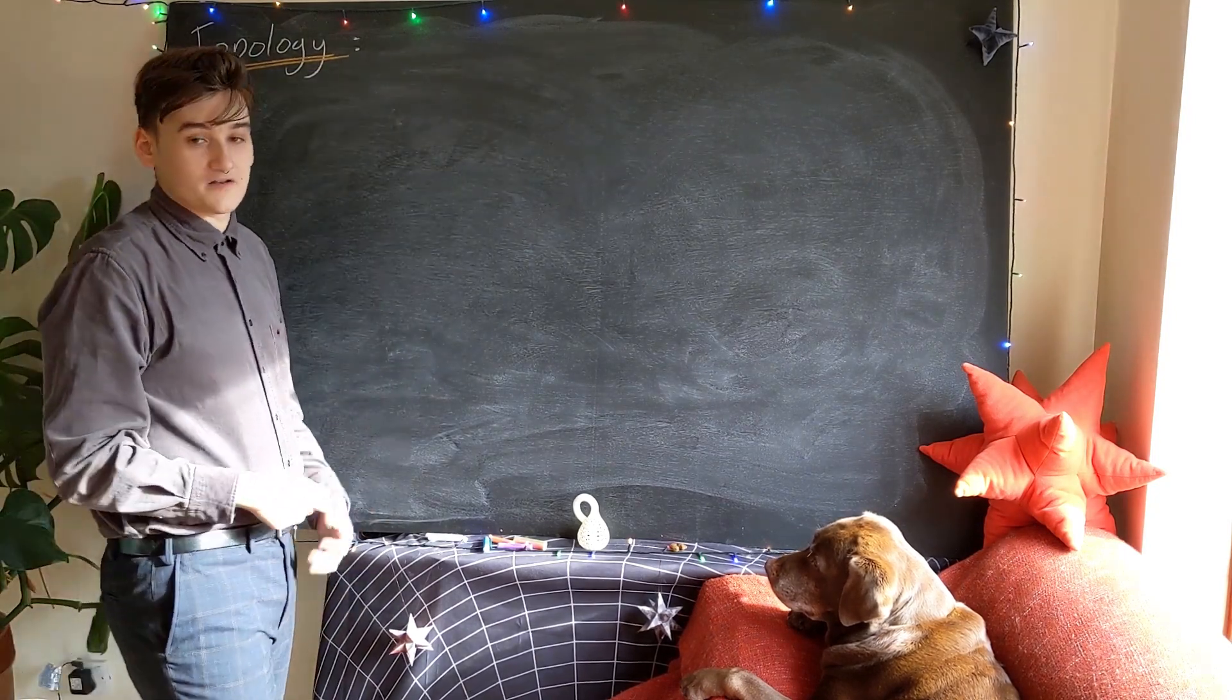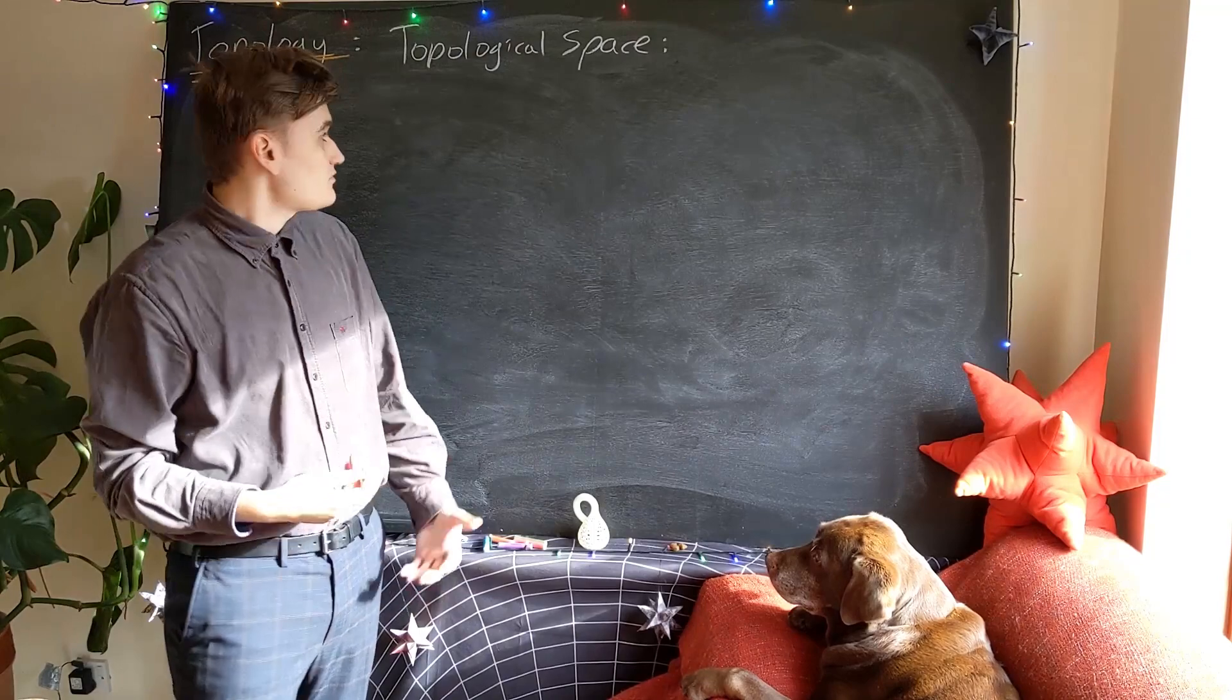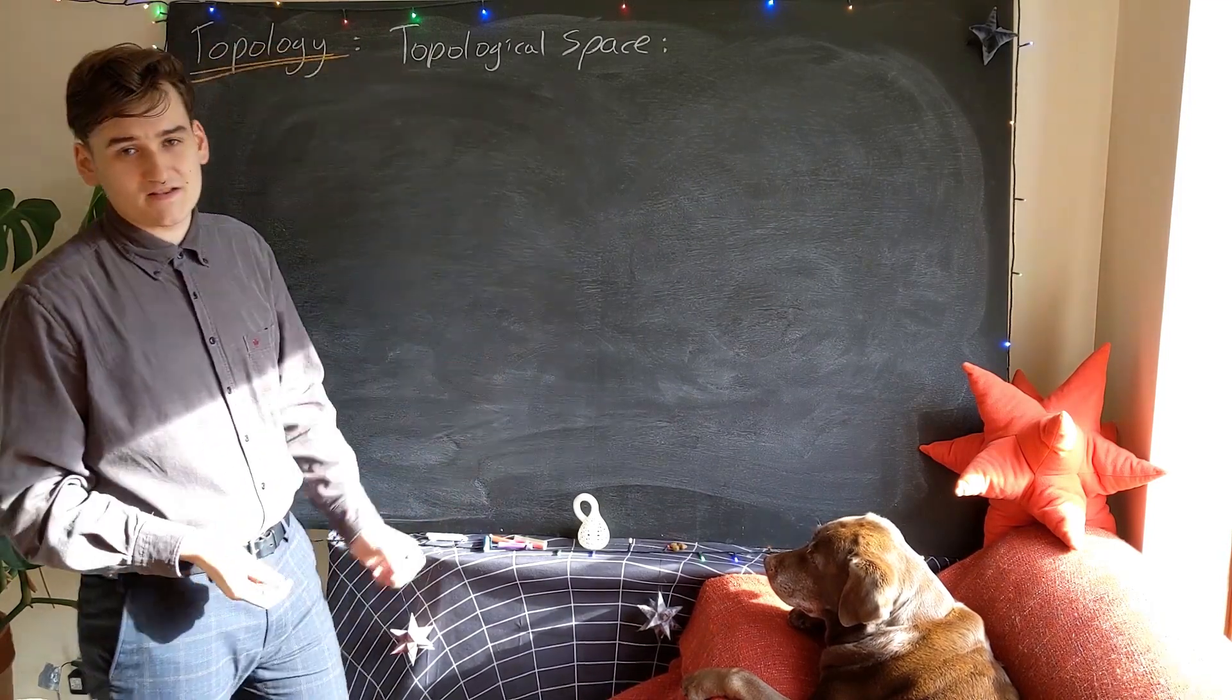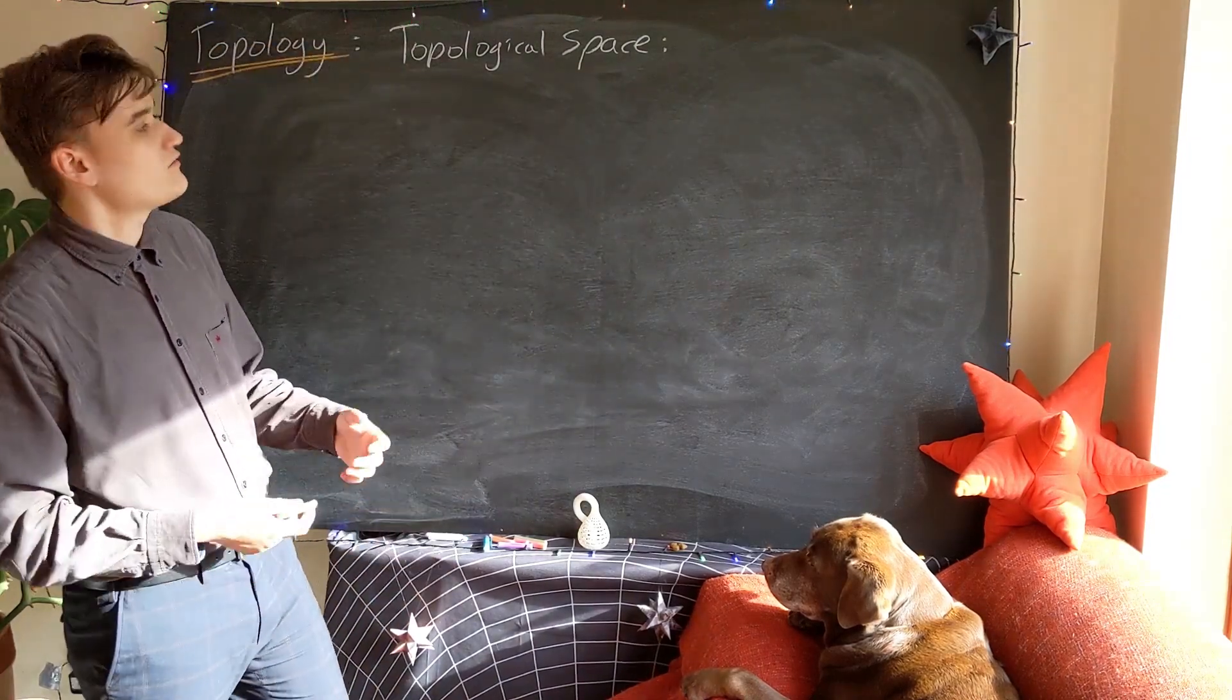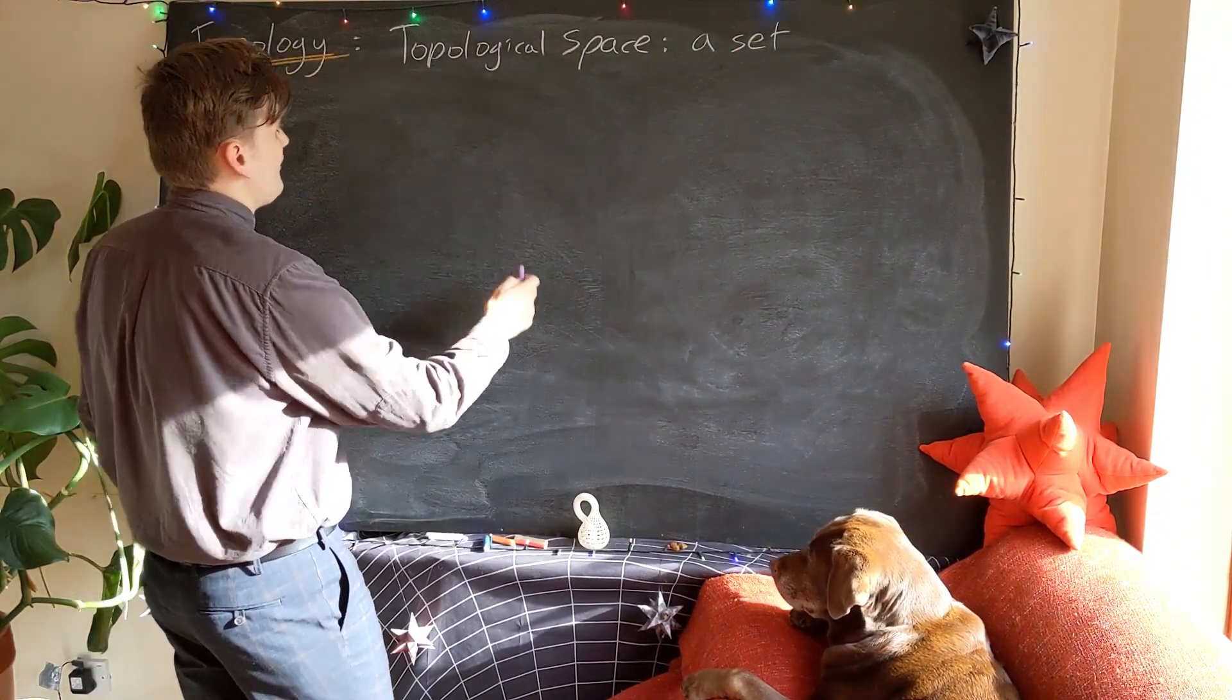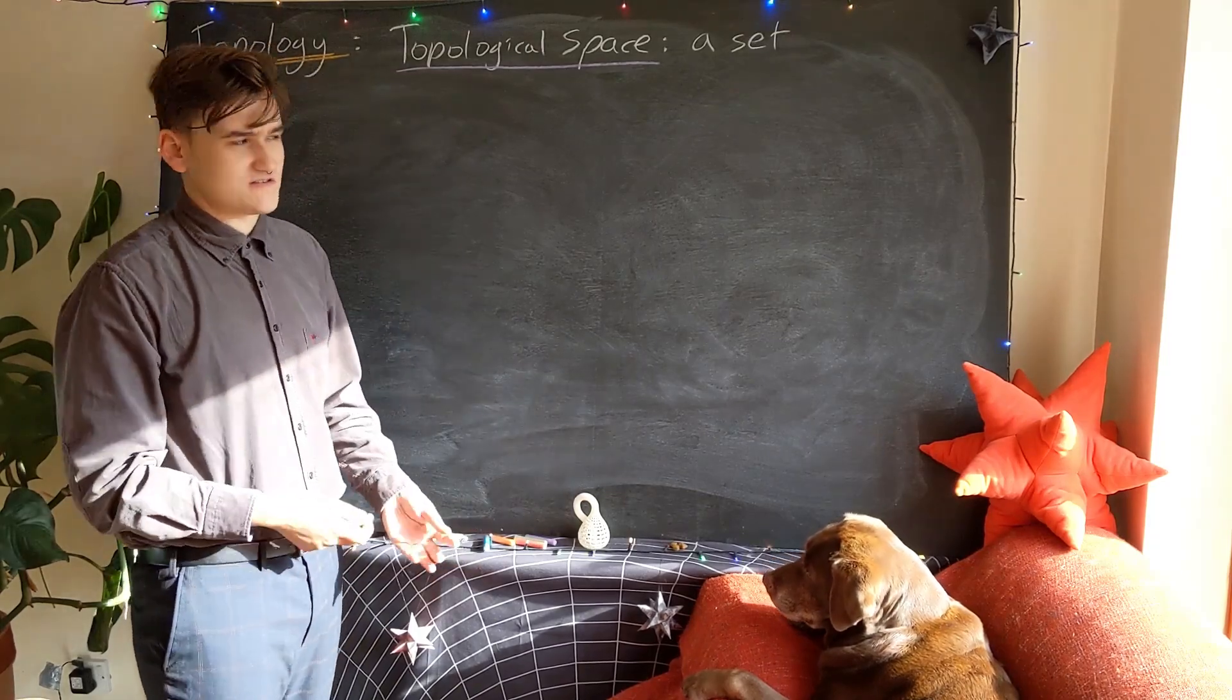First of all we need to define or understand what we mean by a topological space. Essentially a topological space could be any kind of abstract object. We usually like to think about it as a set of points that would correspond to some geometrical object, but essentially we need to be able to realize this abstract entity as a set. Now it can't just be any set, it has to be a particular type of set, or a set that carries a certain structure known as a topology.